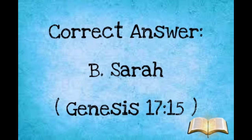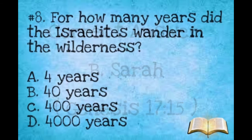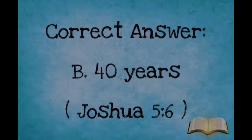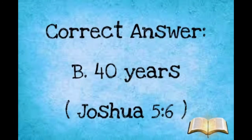Number eight: For how many years did the Israelites wander in the wilderness? A: Four years. B: Forty years. C: 400 years. D: 4,000 years. The correct answer is B, forty years.